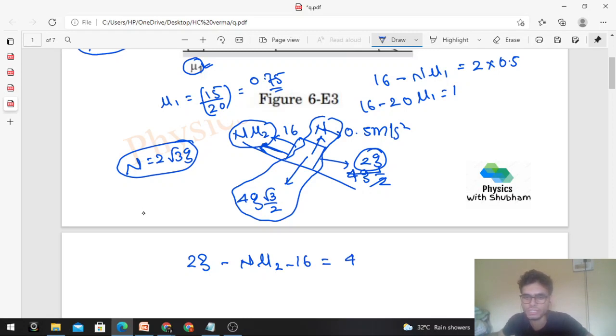And friction will be N into μ2. This will be limiting friction or you can say kinetic friction. So normal reaction value we know. The tension is 16, friction we can write. So 2g minus N into μ2 minus 16 that should be equal to mass into acceleration. What is mass? 4. Into what is acceleration? 0.5. So from here we can find out the value of μ2.